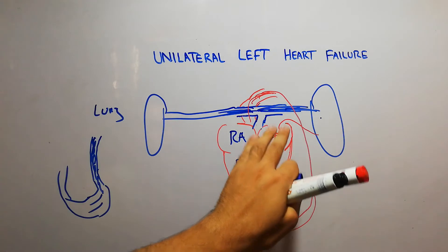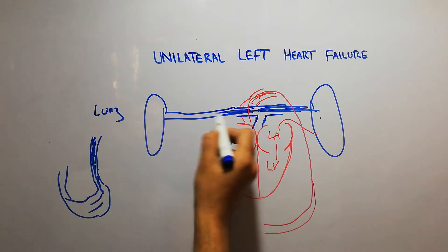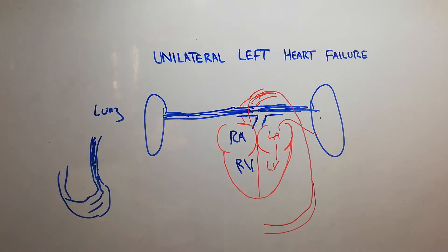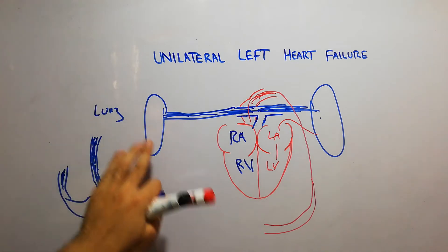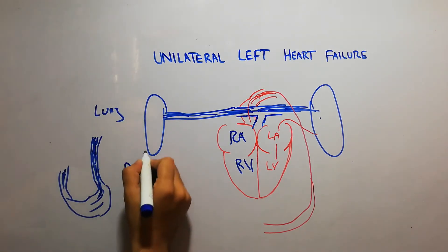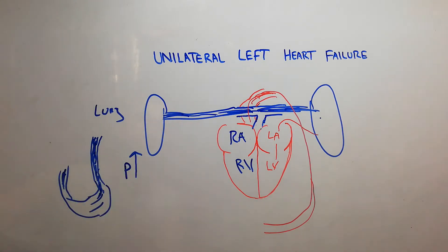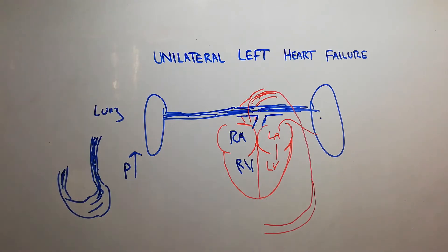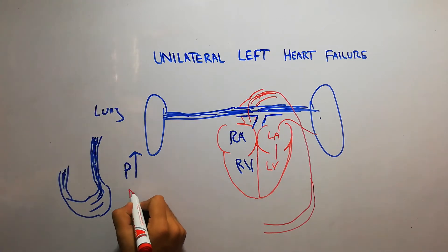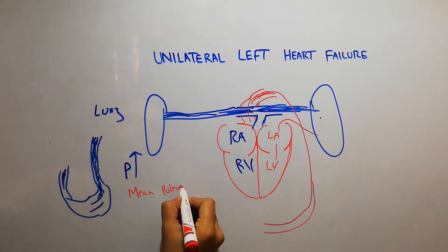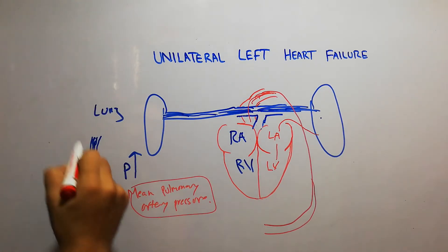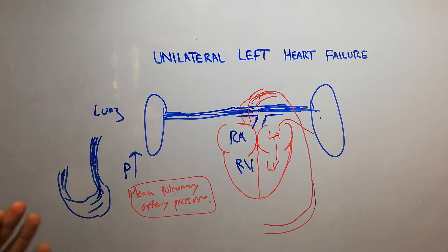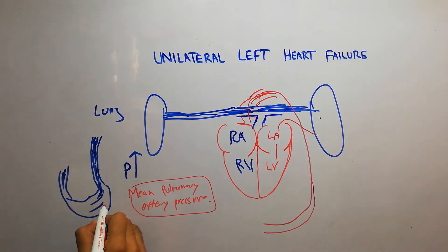Since the left side of the heart has failed, blood coming through the pulmonary artery continues to accumulate in the vasculature of the lung. The pressure in the different blood vessels of the lungs will increase, and when the mean pulmonary artery pressure increases, fluid will come out of the blood vessels.